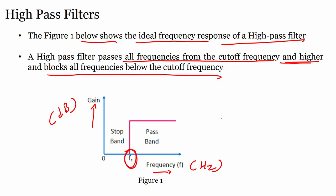In the low pass filter, it passes all frequencies below the cutoff frequency and blocks those above. In the high pass filter it is the opposite: it passes frequencies above the cutoff frequency and blocks those below. Below the cutoff frequency is the stop band; above it is the pass band.